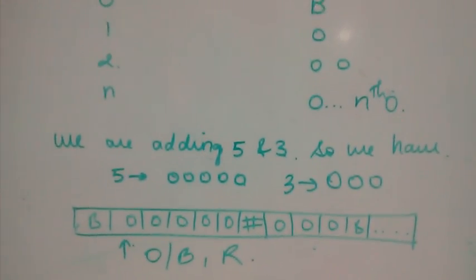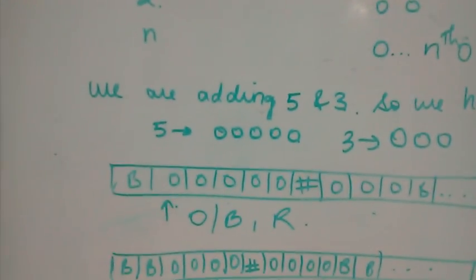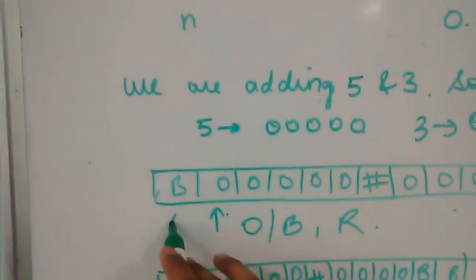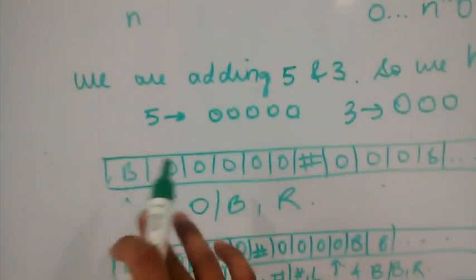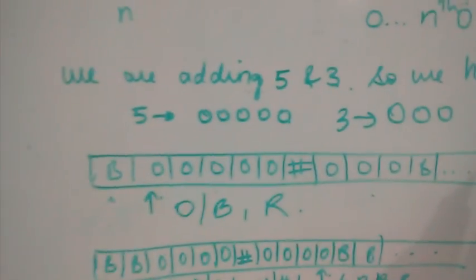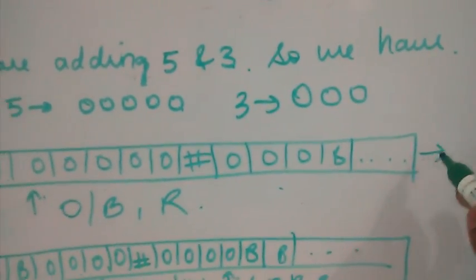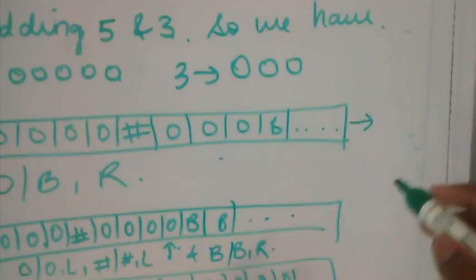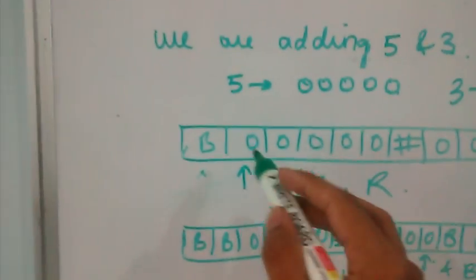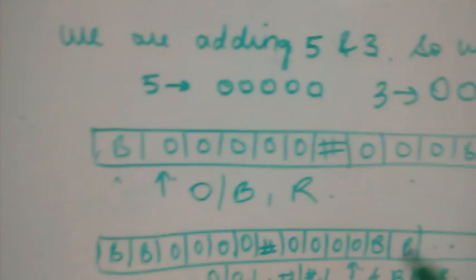The two numbers are separated by a hash, and there is an initial blank space. This is the tape — it is finite from one end and infinite at the other end. We have written the five zeros, then a hash, and then three zeros.